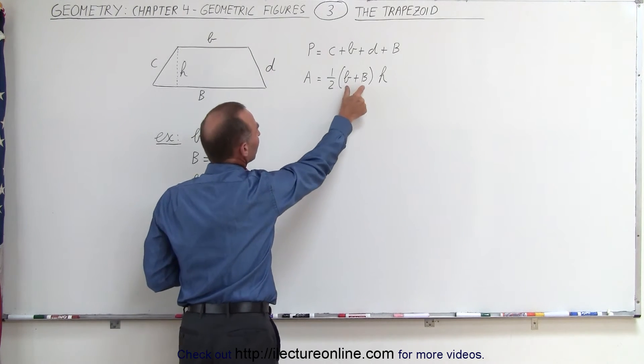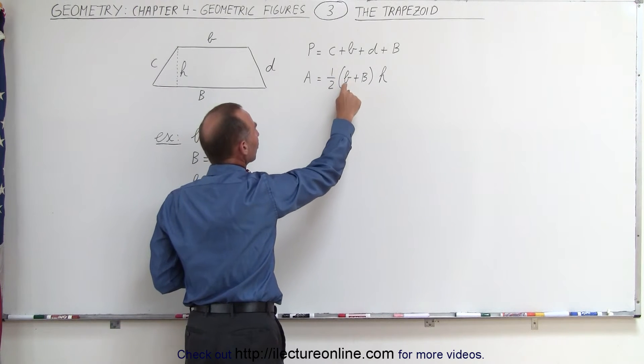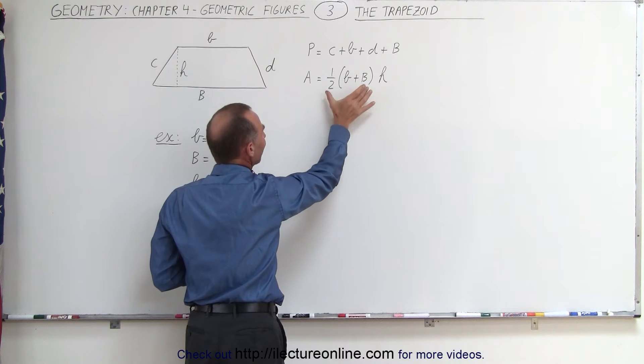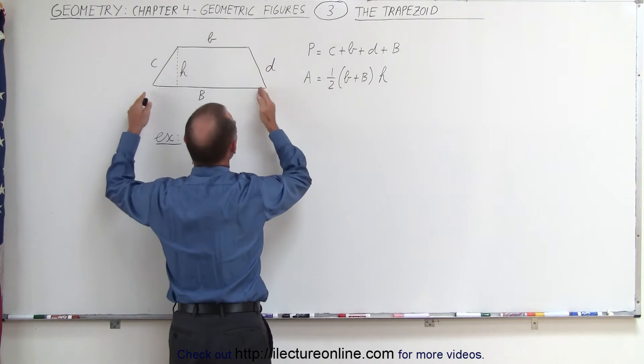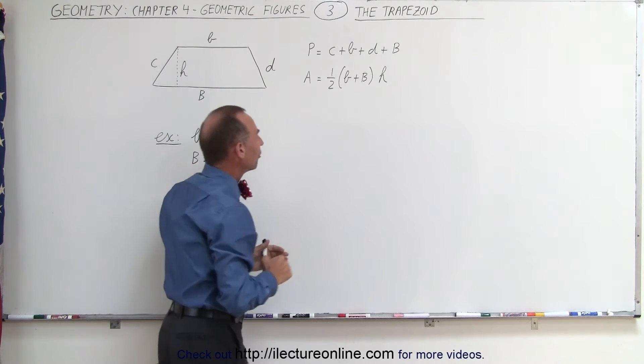That's done by summing them together and dividing by two. So one half times the sum of small b plus big B—that's the average length of these two sides—and we multiply that times the height. That gives us the area of the trapezoid.